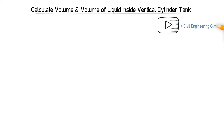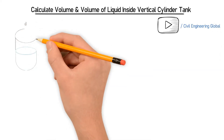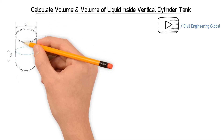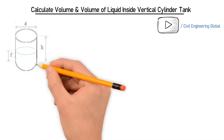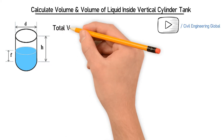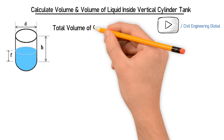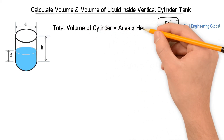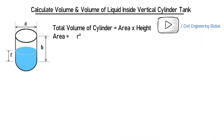Let's draw the vertical cylinder. D is the diameter, H is the height, and F is the height of the liquid inside. As we all know, the total volume of the cylinder is equal to the circular area multiplied by height, and area is equal to pi r squared for a circle.